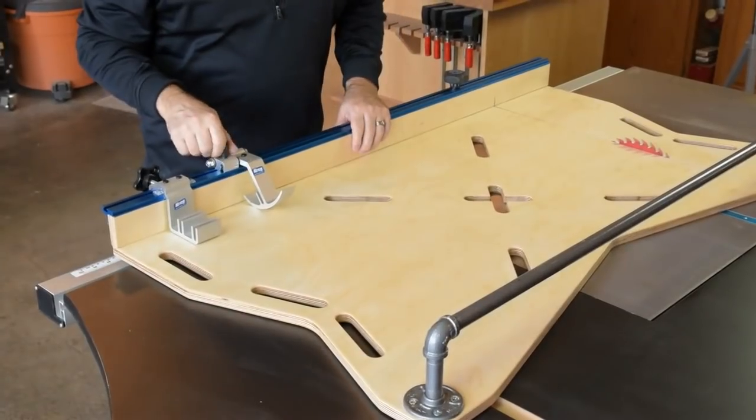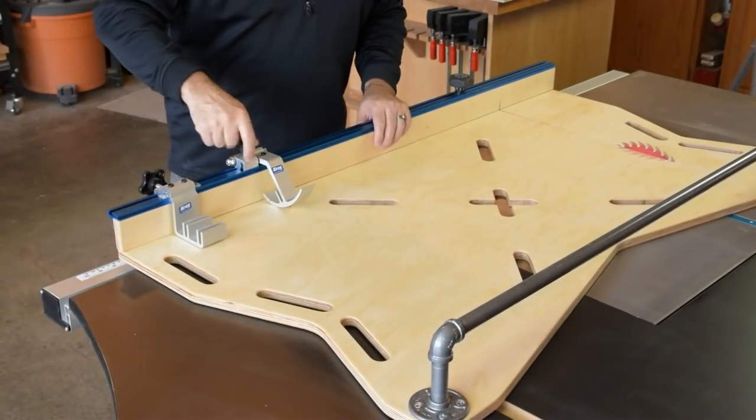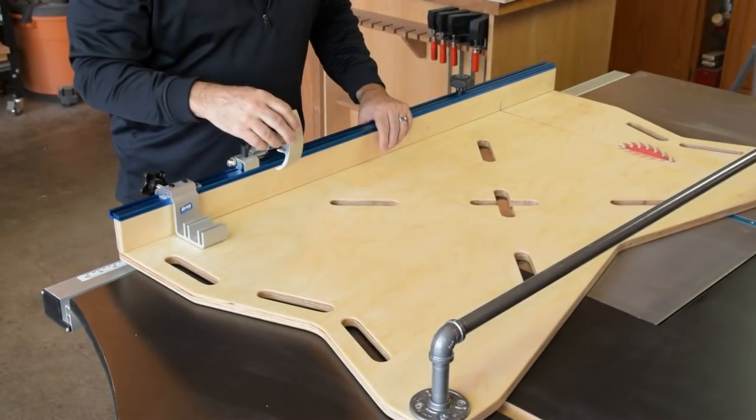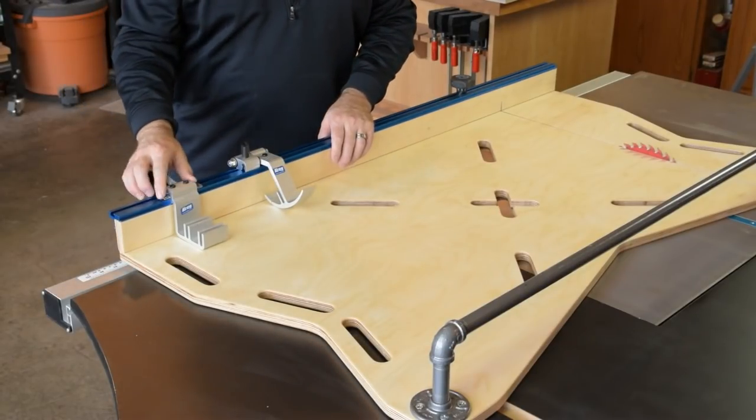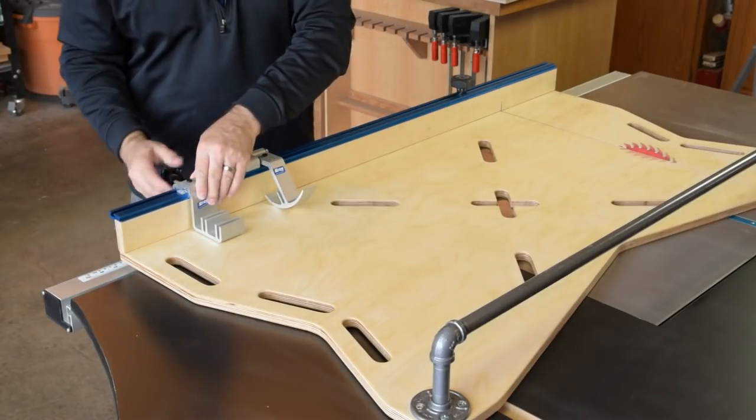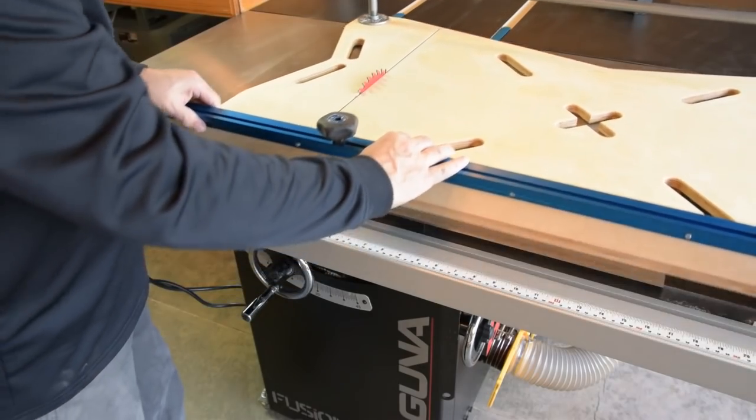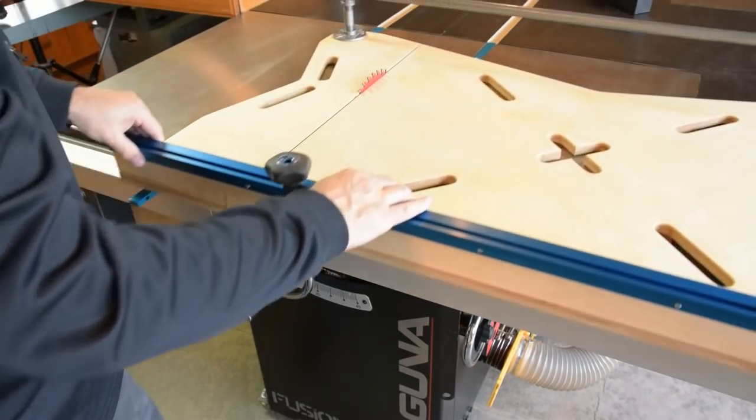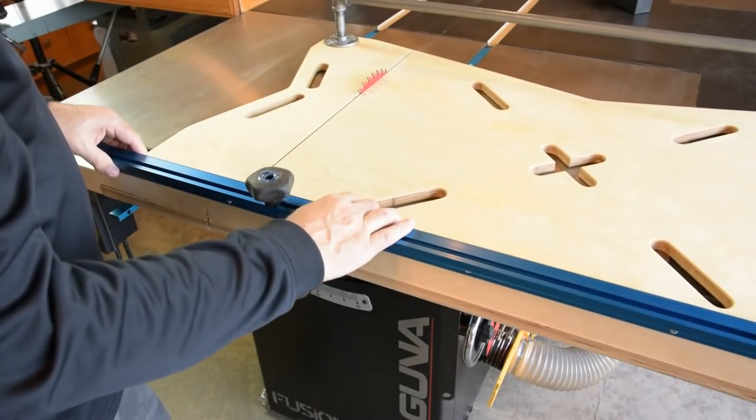We've got some great accessories here. A flip stop that slides the length of the track, can be maneuvered up when not in use and flipped down for repeated cuts or a production stop, which is handy if you just have to make cut after cut after cut at the same length, you might use this one. It's a great sled and just can't believe how smoothly it slides for being a big sled on this Fusion F2. Let's give it a try.